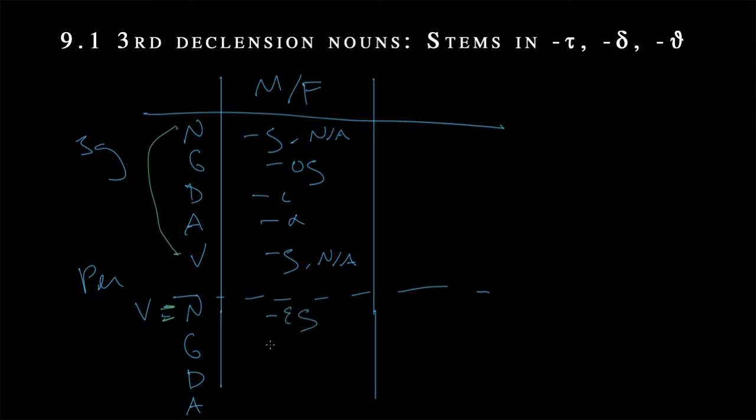A short alpha for the accusative. So know it's short, but we don't need to put it in. And then either a sigma or, again, none for the vocative singular. All right. Well, let's get back to the plural now of masculine, feminine, third declension nouns. We're going to end in epsilon sigma in the nominative, omega nu, the standard genitive plural ending.